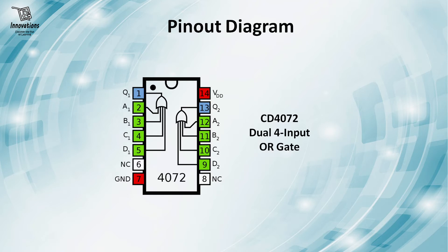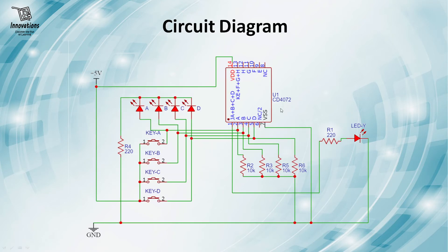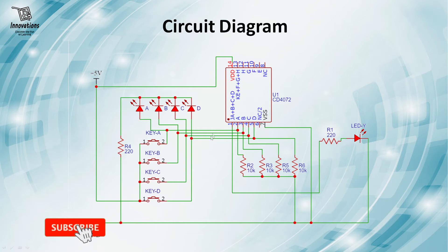Let us have a look at the circuit diagram that we are going to test today. This is the IC CD4072 and we will work on only the first OR gate segment. We have taken four switches which will be giving the input — key A for input A, key B for input B, key C for input C, and key D for input D. Four LEDs are connected with these input switches so that we can see the status of the input, whether the input is high or low. A resistance is connected with the LEDs to limit the current to the LEDs, and these are fed into the input pins of the IC.